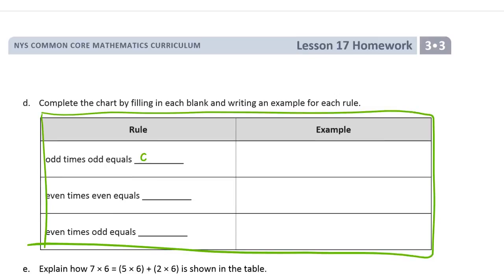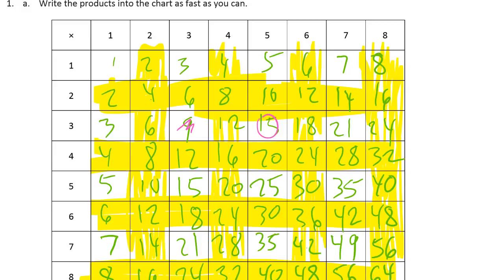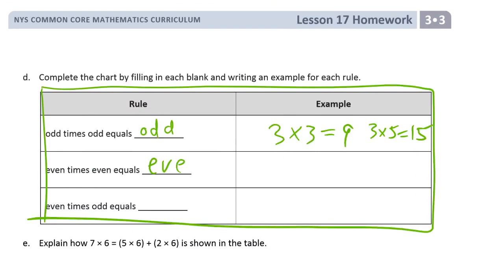So odd times odd equals odd, and we can write three times three equals nine, or three times five equals fifteen as examples. Even times even — what happens there? Like two times two is four, two times four is eight, and eight times six: six and eight are both even. Those are always even. You can see that where even columns and rows intersect is always even, so even times even equals even. Two times two equals four is our example.